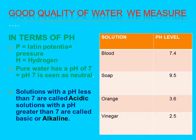Water quality is measured in terms of pH. P stands for potential, H stands for hydrogen. Pure water has a pH of 7, meaning it is neutral. Solutions with pH greater than 7 are called basic or alkaline; solutions with pH less than 7 are called acidic. In daily life: bread has a pH of 7.4, most soaps 9.5, orange juice 3.6, and vinegar 2.5.